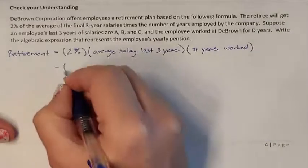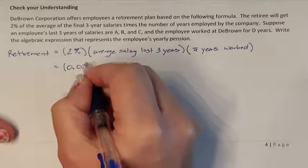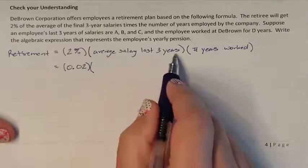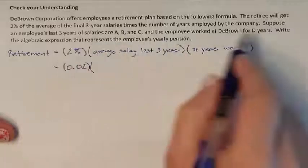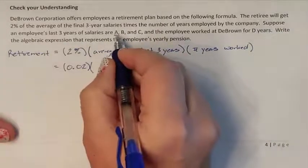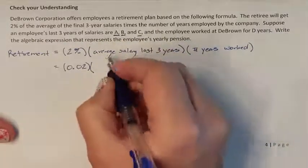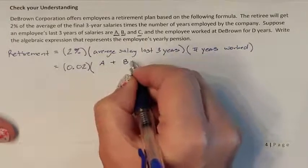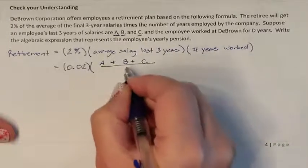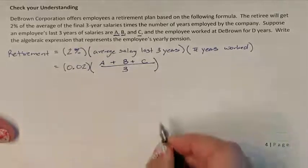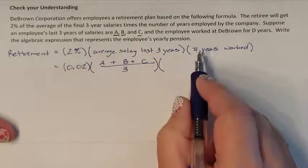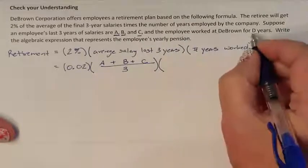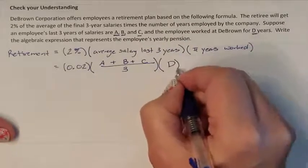So 2% is 0.02 as a decimal. We have to multiply that by the average salary for the last 3 years. It tells us the salaries are A, B, and C — so year 1, year 2, year 3 — divided by 3, giving us the average for the last 3 years. And now we need the number of years worked. It said the employee worked at Brown Corporation for D years, so here is our D for how many years he worked.